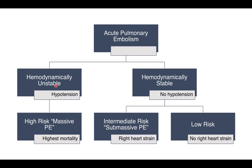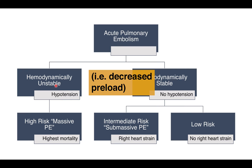Let's think about what a pulmonary embolism does in the body. A pulmonary embolism is a blood clot that usually forms in the veins of the lower extremities or in the pelvis, and it moves up the IVC into the right atrium, then the right ventricle, and then to the pulmonary arteries. In a patient with a pulmonary embolism, some of that blood flow does not make it back to the left heart, and if that blockage is sufficiently large, it can cause systemic hypotension.